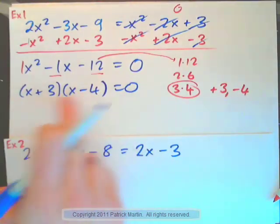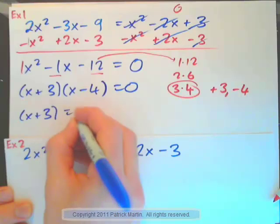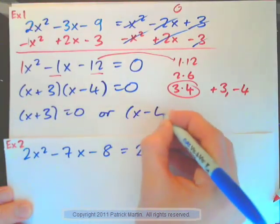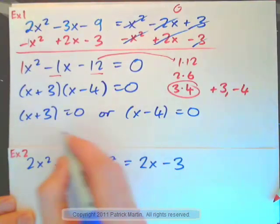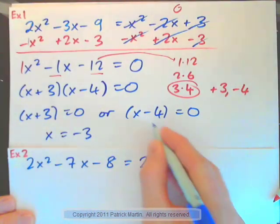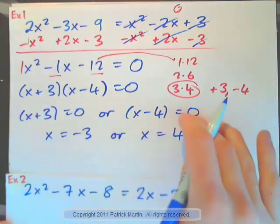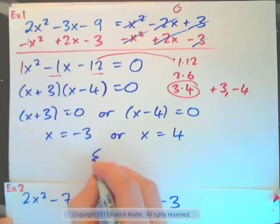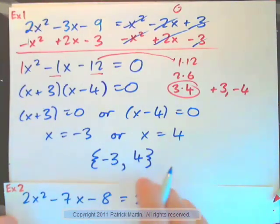So, we need to use the zero product rule. This time, this is zero. That means the x plus 3 is zero, or x minus 4 is zero, right? Subtract 3 from both sides. x is negative 3. Add 4 to both sides. x is positive 4. So, the answer, as a solution set, negative 3, positive 4. Two solutions, right?